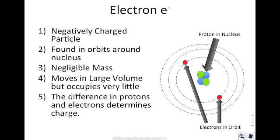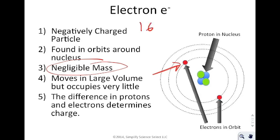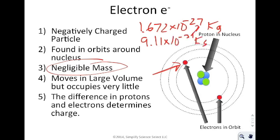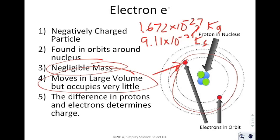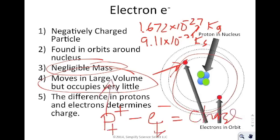Next, you have the electrons — negatively charged particles found in orbits around the atom. They have negligible mass — very, very small even compared to the mass of a proton. The mass of a proton is 1.672 × 10⁻²⁷ kilograms, which is small in and of itself. But the mass of an electron is 9.11 × 10⁻³¹ kilograms — roughly 10,000 times smaller than a proton, so we say the electron has negligible mass. The electron moves in a very large volume but does not occupy all of it at one time. The difference between the number of protons and electrons determines the charge: protons minus electrons equals charge.